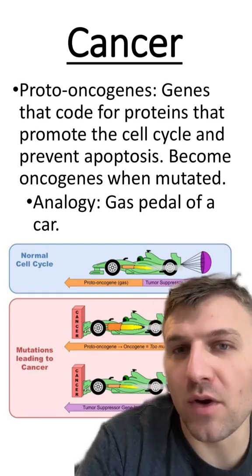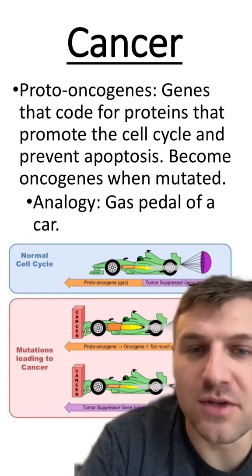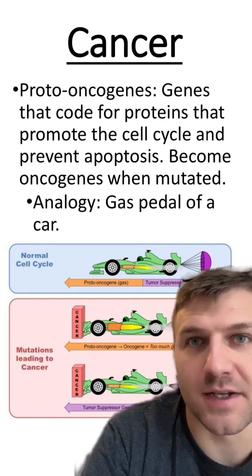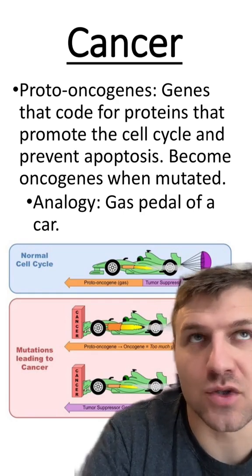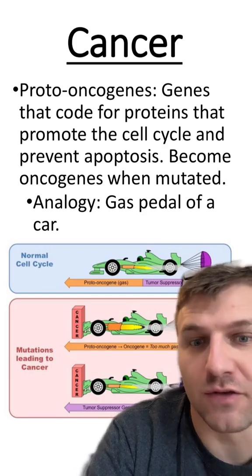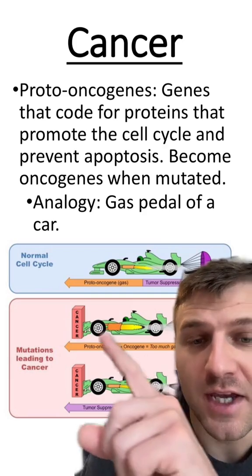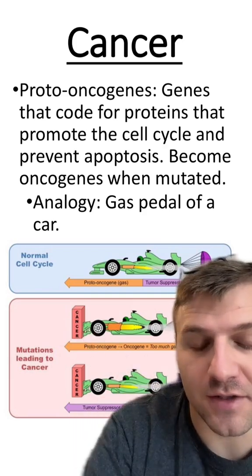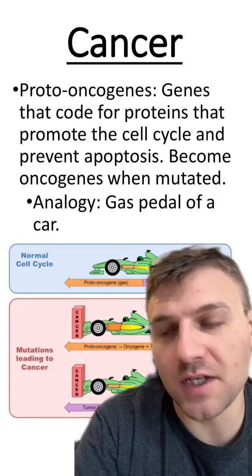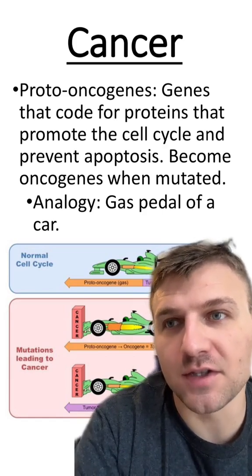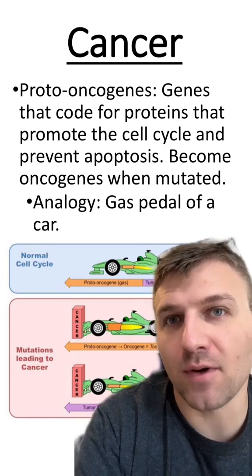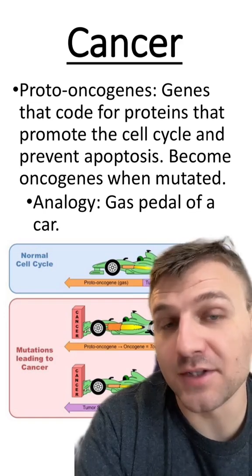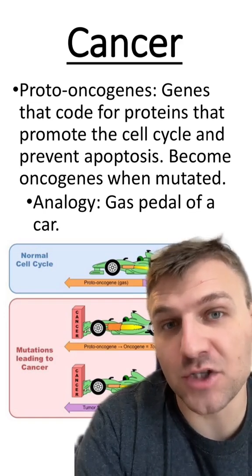When these proto-oncogenes are mutated, it's like the gas pedal always being pressed in when you're driving, and this will cause the car to eventually crash into the wall of cancer. Basically, when these genes have mutations, it creates a problem with how often mitosis is initiated in the cell.